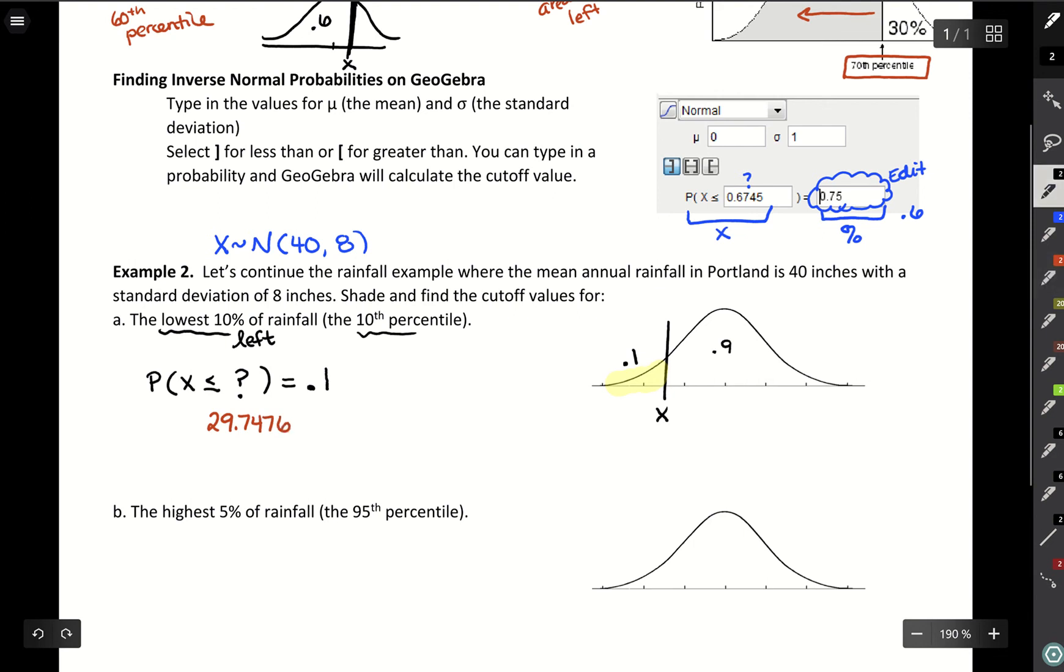So what this would equate to is the 10th percentile of rainfall is at 29.7476 inches. Or you could say the lowest 10% of rainfall in Portland is below 29.7476 inches. That works too, either way.